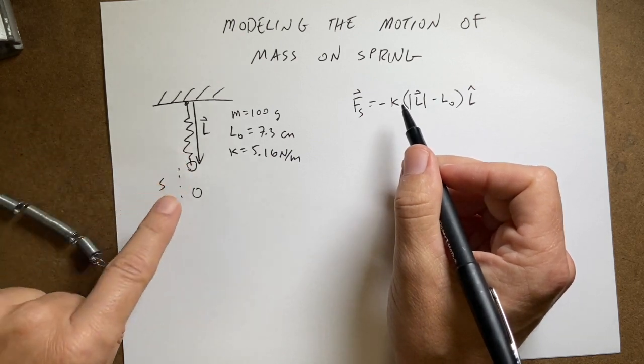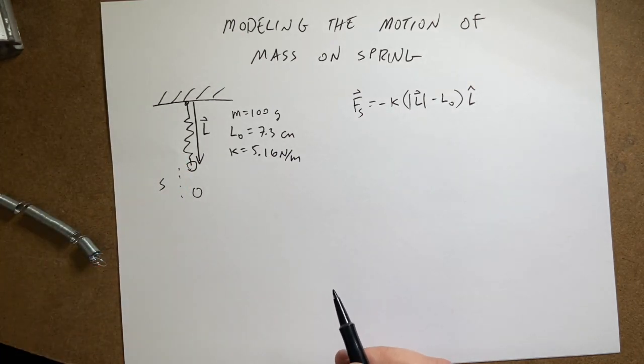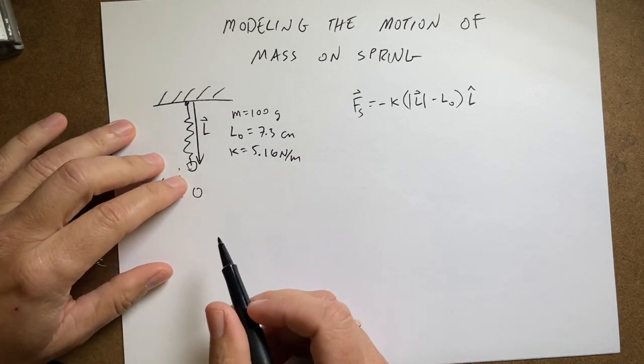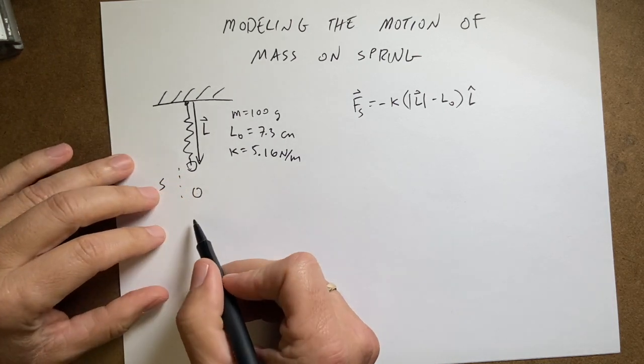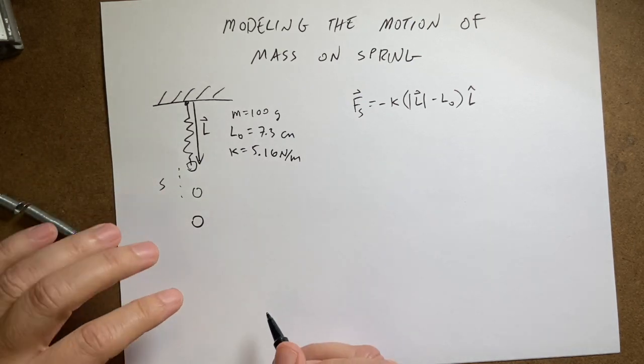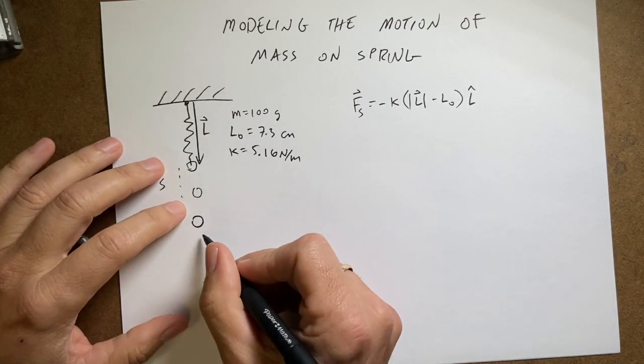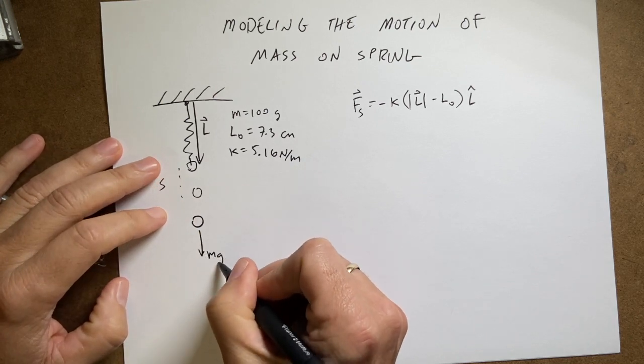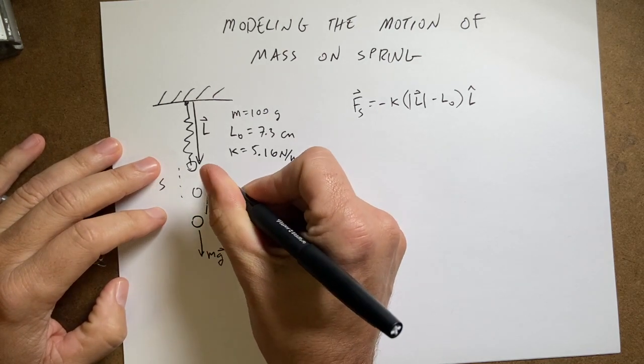And so the negative sign means that if it's stretched this way the force pulls back that way. So what happens if I put a mass on here and stretch it down over to here, some value, then what forces are acting on it? Well I have the gravitational force pulls down and then the spring force pulls up.